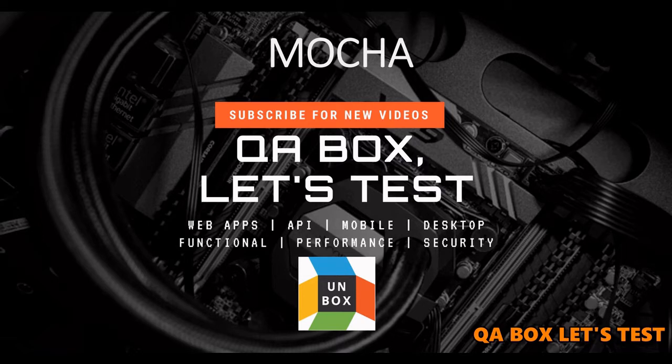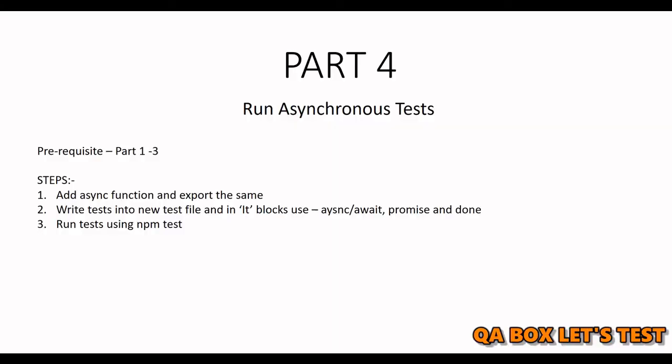Welcome to QA Box. In this video we are going to talk about how we can run asynchronous code inside the it block. In JavaScript, asynchronous code is written with the help of callbacks, promises, and async functions. In Mocha, when you write asynchronous code inside the it blocks, you have to specifically tell Mocha when the async operation is complete.